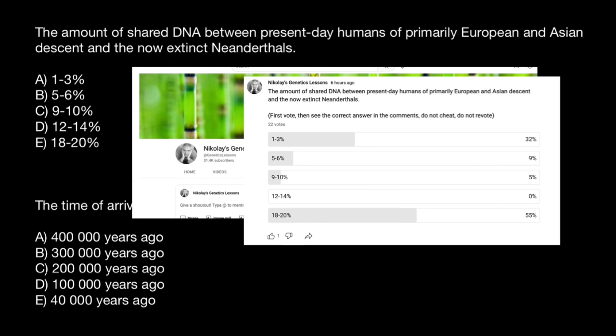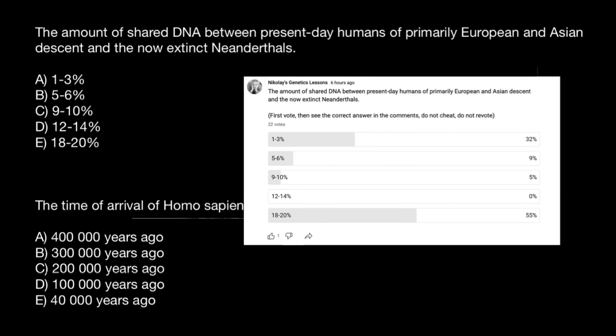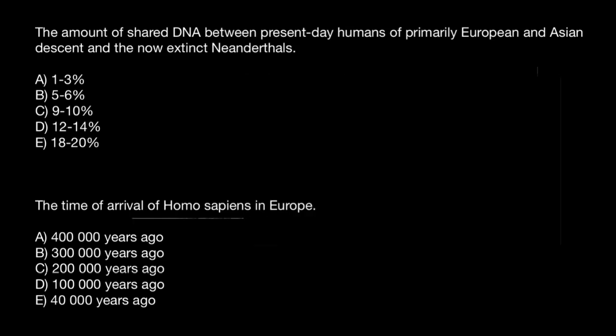Most students gave a wrong answer. The correct answer is between 1 and 3% — that is how much Neanderthal DNA we have inherited in our genome. There is not much to explain here; you just have to memorize this statistical information: between 1 and 3%.